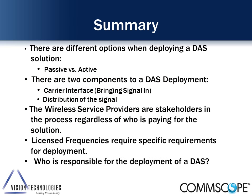To summarize: we covered different options when deploying a DAS — passive or active. A passive solution is used in a very small space or for public safety only — it's just a feed going out to antenna points over coax, no electronics. There are two components in a DAS system: the carrier interface bringing the signal in, and the distribution system. A key point is that wireless service providers are stakeholders in this process regardless of who's paying, and licensed frequencies require specific deployment requirements.